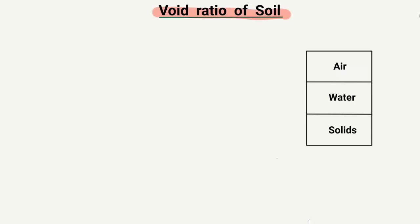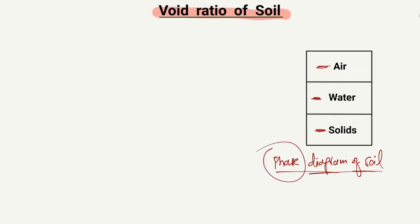I will explain this with the help of an example and also with the help of the phase diagram of soil. The phase diagram of a soil sample basically contains three main components: one is air, one is water, and one is solids. These are the three basic components of the phase diagram of soil.